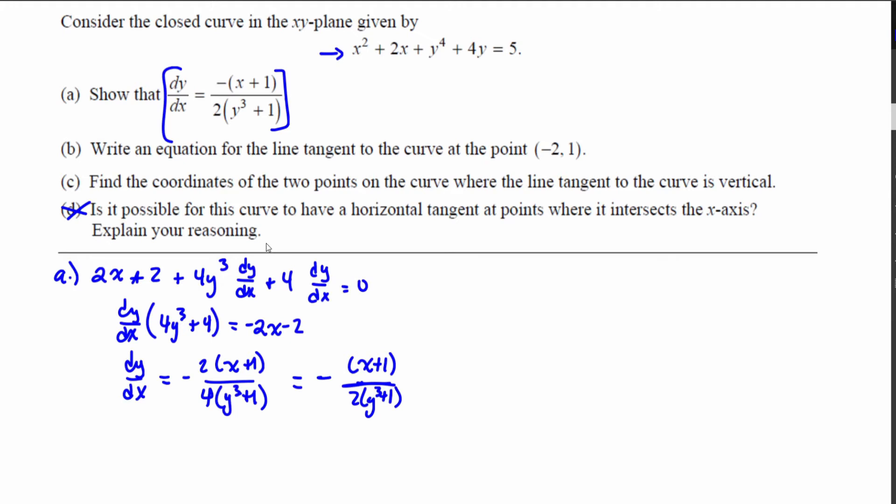Now what I want to do in part b is I want to write an equation for the line tangent to the curve at the point negative 2, 1. But remember when you're doing that you want to find first the point of tangency and the slope of the tangent line.